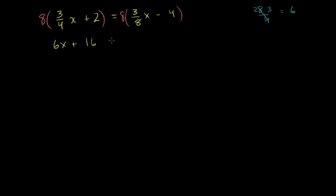So the left-hand side is 6x plus 16 is going to be equal to 8 times three-eighths. That's pretty easy. The 8's cancel out, and you're just left with 3x. And then 8 times negative 4 is negative 32. And now we've cleaned up the equation a good bit. Now the next thing, let's try to get all the x terms on the left-hand side and all the constant terms on the right.